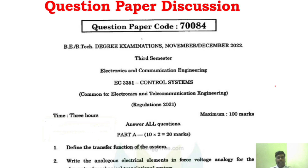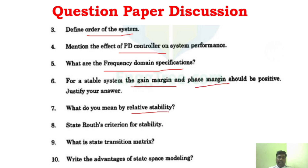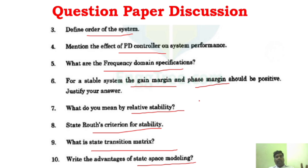We are looking at the November/December 2022 question paper, Regulation 2021. Part A questions include: define transfer function of the system, analogous electrical elements and force-voltage analogy, define order of the system, mention the effect of PID controller, frequency domain specifications, stable system gain margin and phase margin, relative stability, root criterion for stability, state transition matrix, and state space modeling. Studying five years of question papers will help you comfortably attempt 6 to 7 questions.